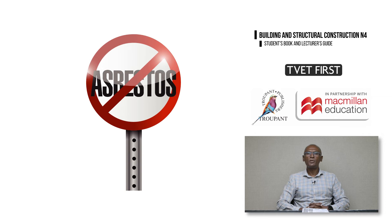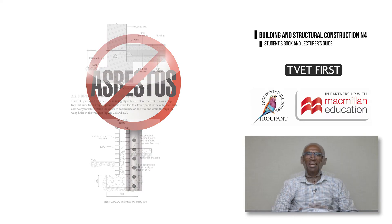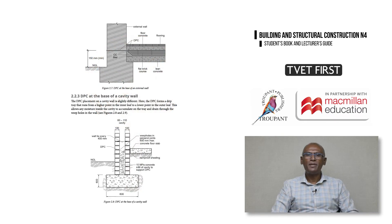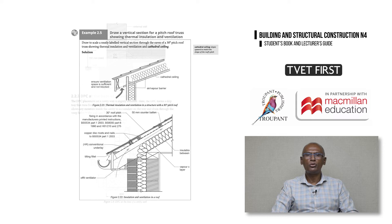Building materials which are no longer used in construction, such as asbestos, have been removed from the curriculum. It is now explicitly stated where students should draw labeled construction diagrams, such as the section drawings in module 2 showing the damp roof course and thermal insulation and ventilation.